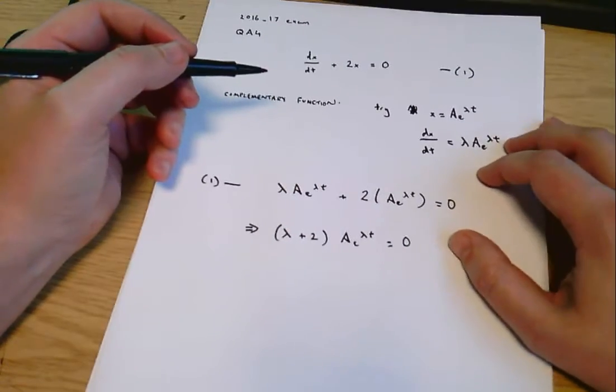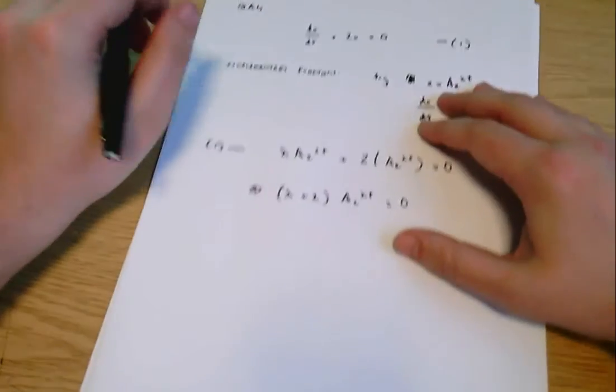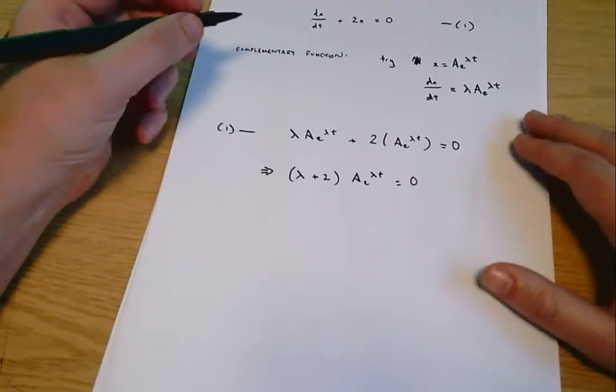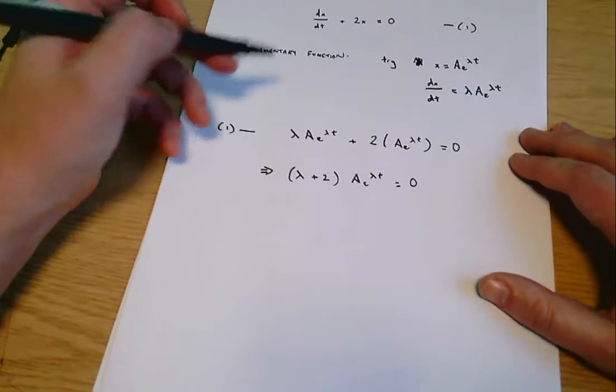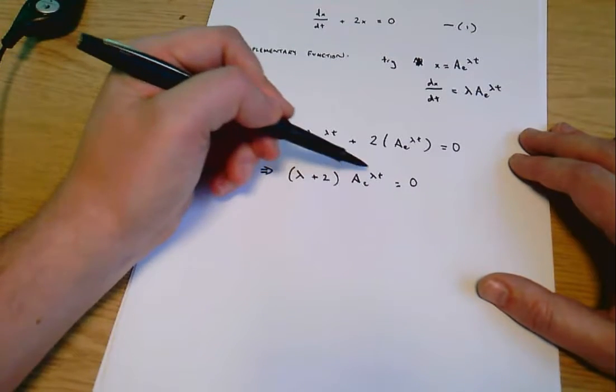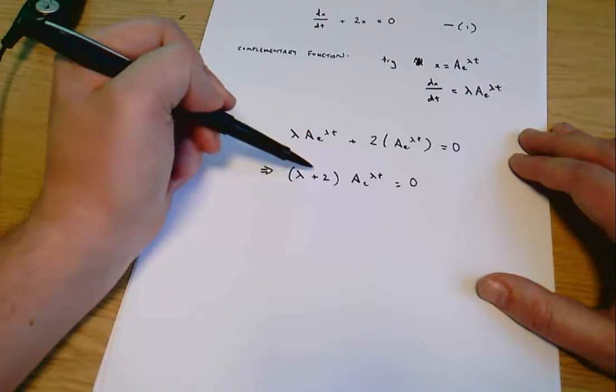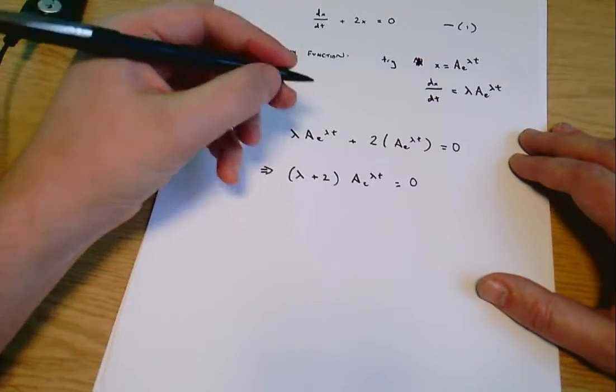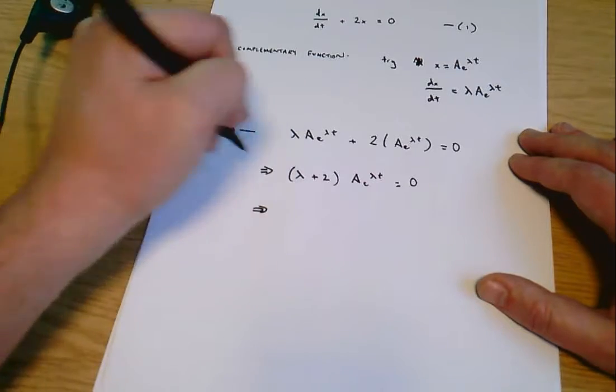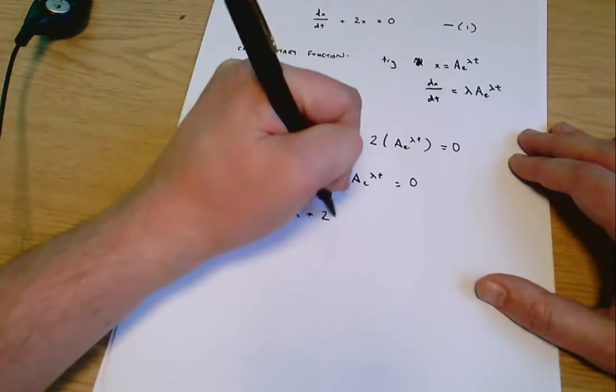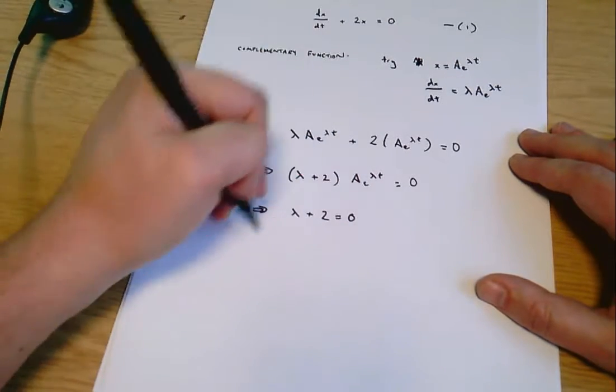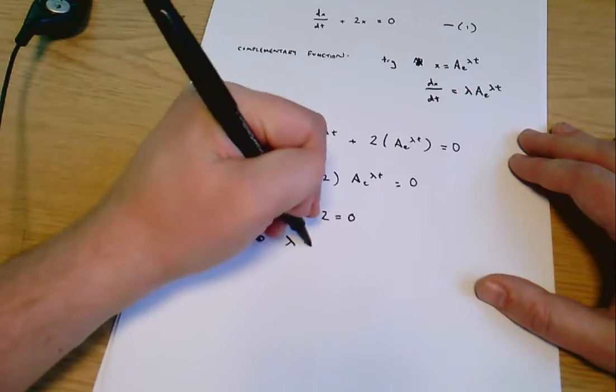Next we know that if two things multiply together to give zero, one of them must equal zero. If this second term equals zero it's all a bit trivial, and so the important answer is when the first term equals zero and so we'll say lambda plus two equals zero and therefore lambda equals minus two.